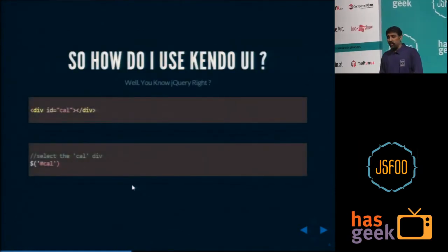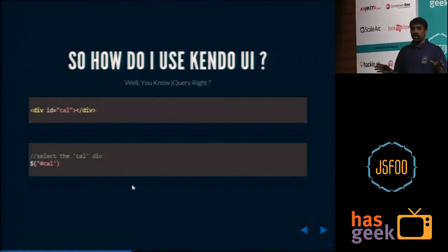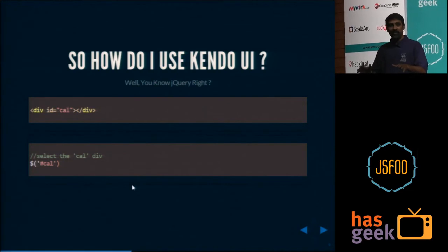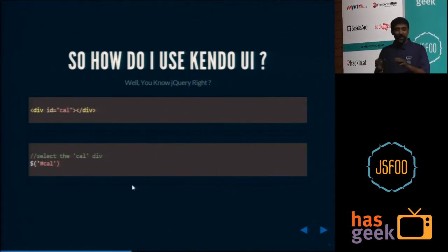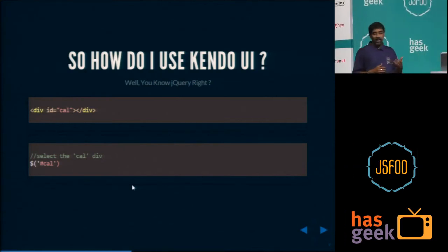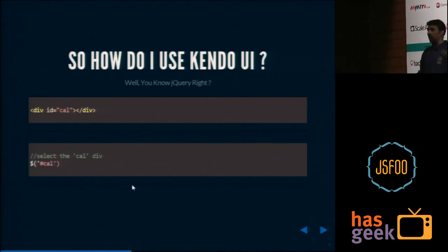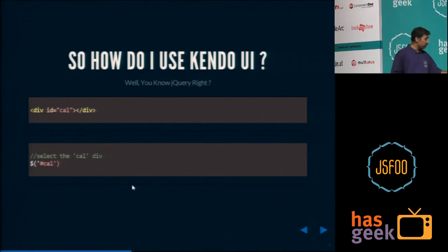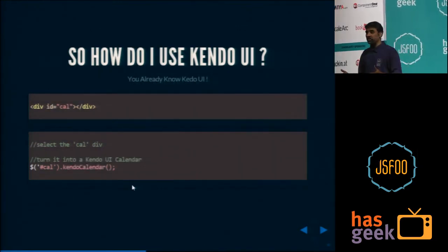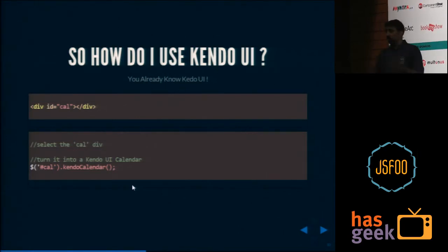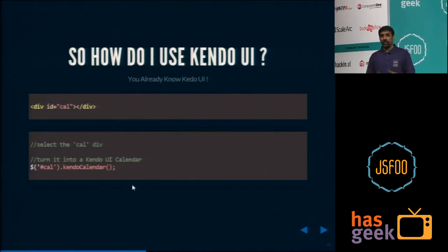So how do I use Kendo UI? How many of you know jQuery? If you know jQuery, what do you do? You say div ID cal, and then in JavaScript you say: hey jQuery, give me the element with ID cal — you do the hash cal. Well, if you know that, you know Kendo UI. All you need to do to convert that div into a Kendo widget is just say dot kendo-calendar, or whatever widget you want — date picker, palette, anything.